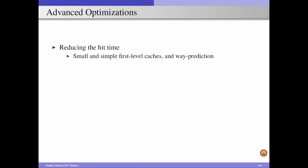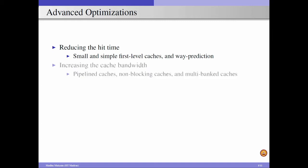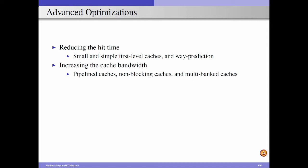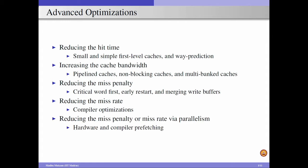To reduce the hit time we consider small and simpler caches, and a technique called way prediction. For increasing the cache bandwidth we consider pipeline caches, non-blocking caches, and multi-banked caches. To reduce the miss penalty we look at critical word first, early restart, and merging write buffers. For reducing the miss rate we look at compiler optimizations from software and also hardware and software prefetching techniques.